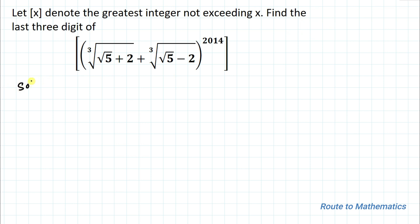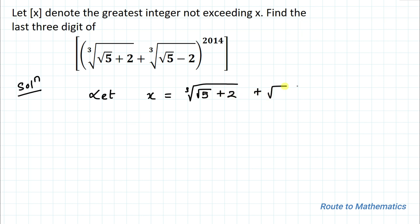Without any delay, let's start the solution. In the first step, let's take x equals to ∛(√5+2) + ∛(√5-2). Now in the next step, by cubing both sides of the equation,